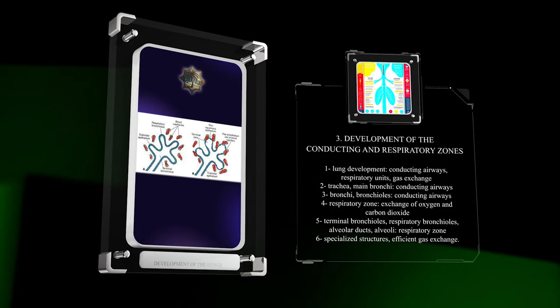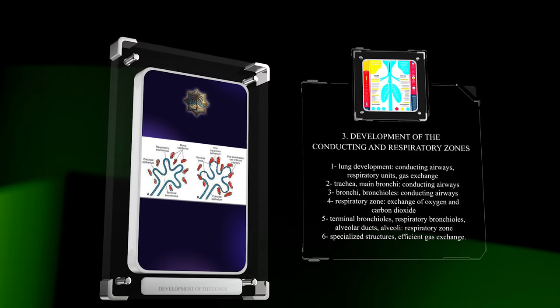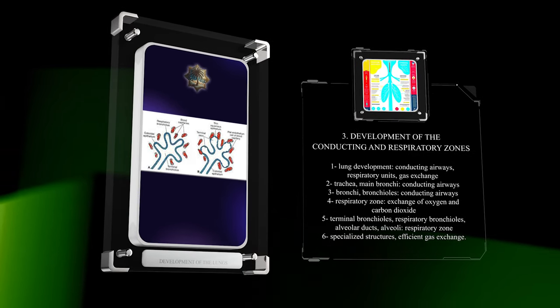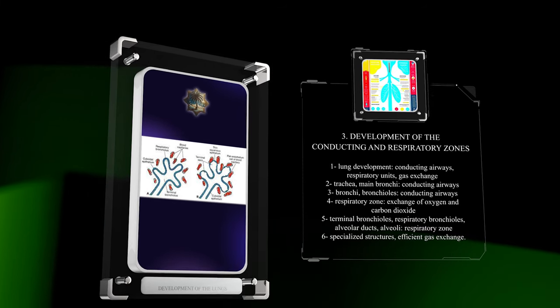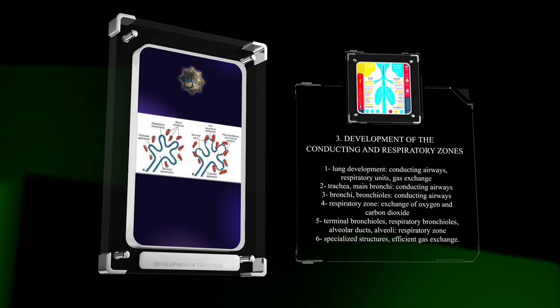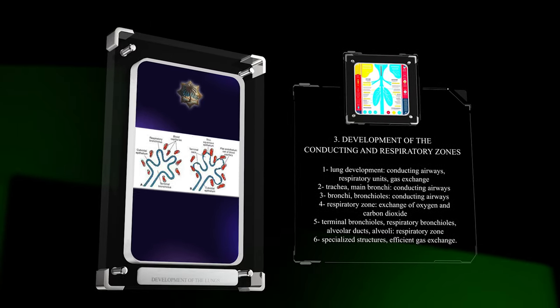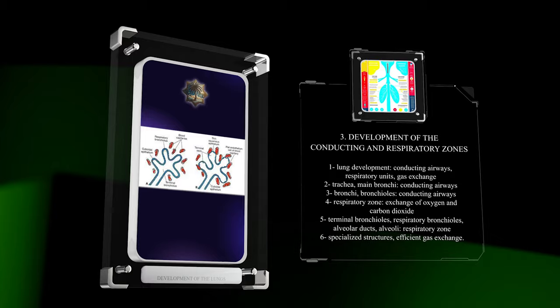On the other hand, the respiratory zone is involved in the exchange of oxygen and carbon dioxide. It emerges from the terminal bronchioles and contains structures such as respiratory bronchioles, alveolar ducts, and alveoli. These specialized structures form the foundation for efficient gas exchange.